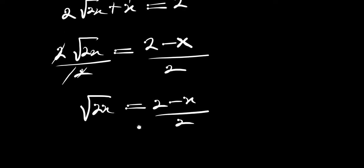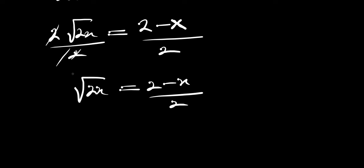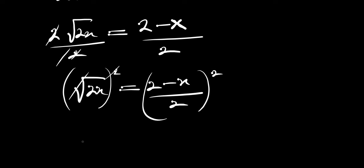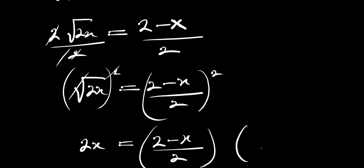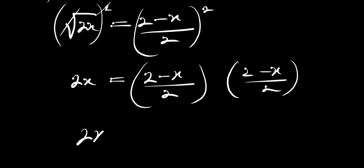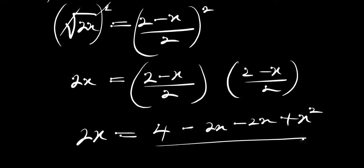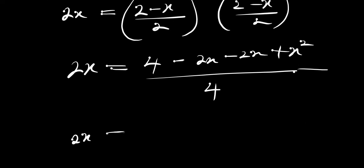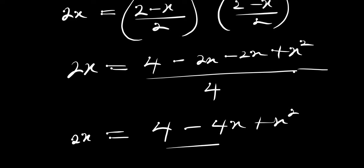In order to solve for x again, we take the squares of both parts of this equation. The square cancels the root, giving us 2x equals (2 minus x)/2 times (2 minus x)/2. Multiplying that out, we have 2x equals (4 minus 2x minus 2x plus x²) divided by 4, which simplifies to 2x equals (4 minus 4x plus x²) divided by 4.